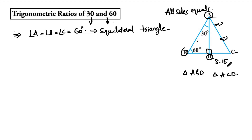Here, B and D, and D and C — these sides are equal, because the perpendicular AD is dividing BC into two equal parts. So AD divides BC such that BD and DC are equal.